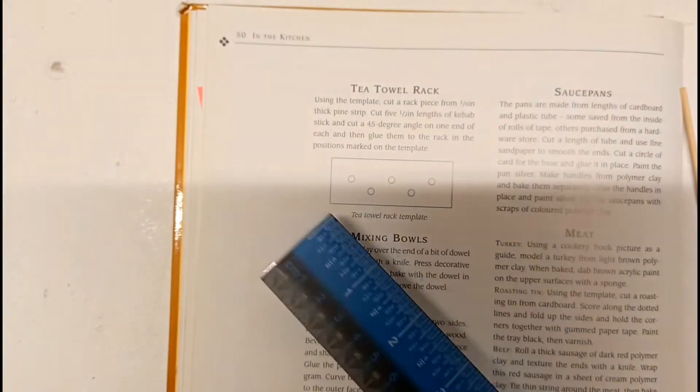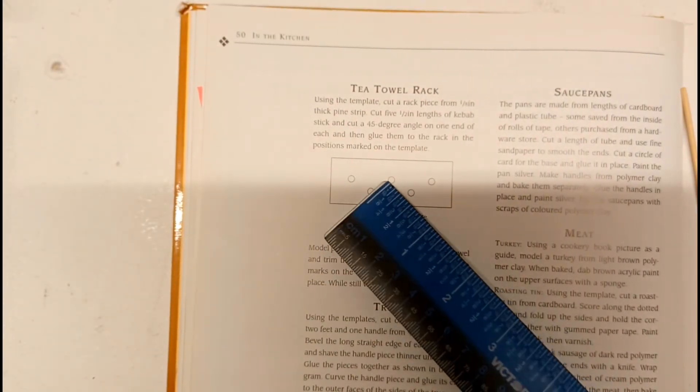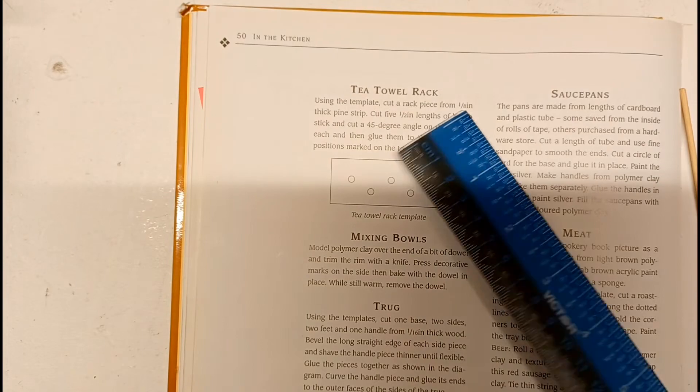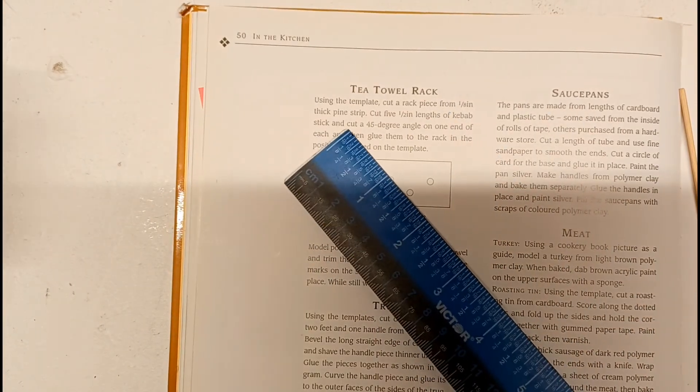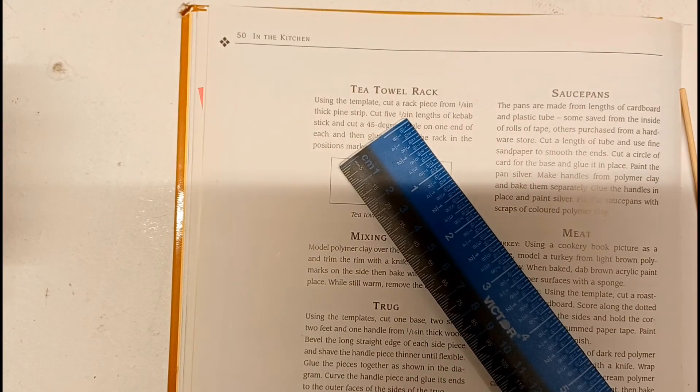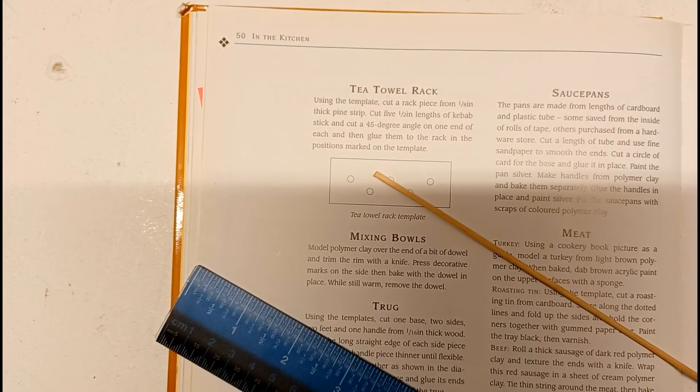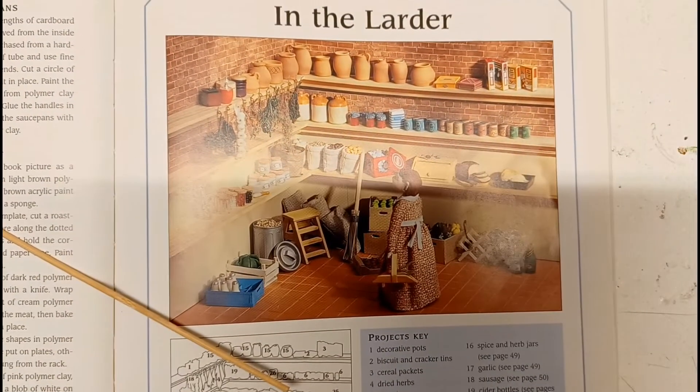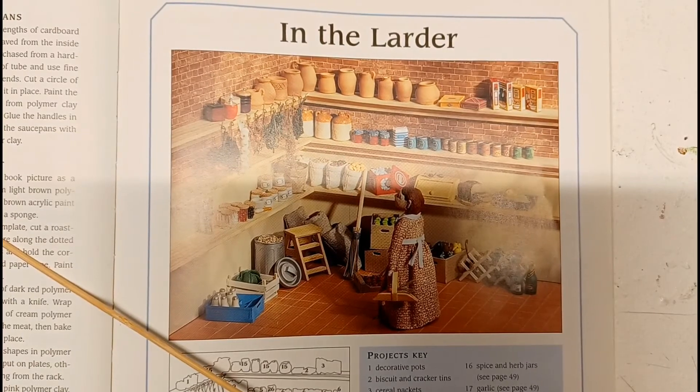So we're going to make the towel rack using the template. Cut a rack piece from 1 1⁄8 inch pine, but I'm not doing that. We're doing this with cardboard. And cut 5 1⁄2 inch lengths of kabob stick at a 45 degree angle. I'm going to need my cutting tools, so we're going to go over here.